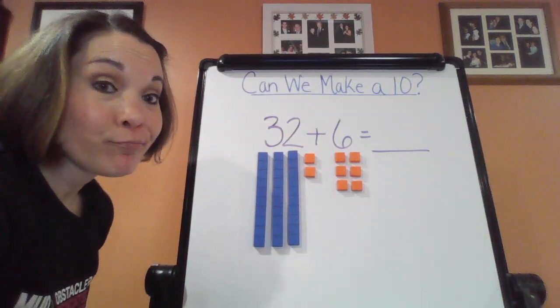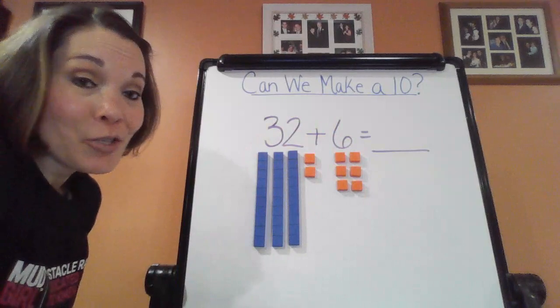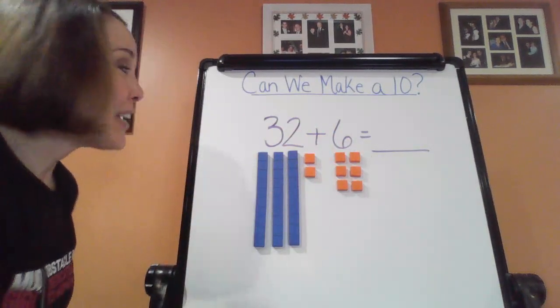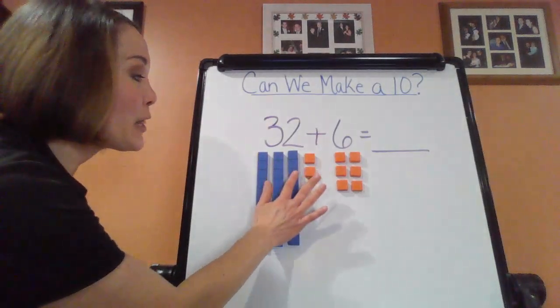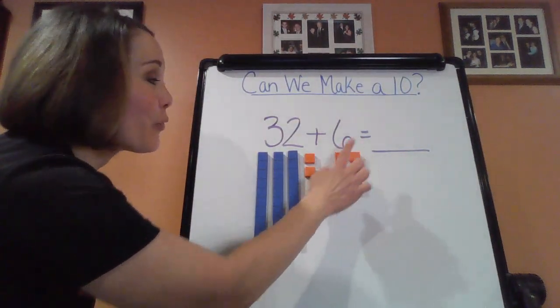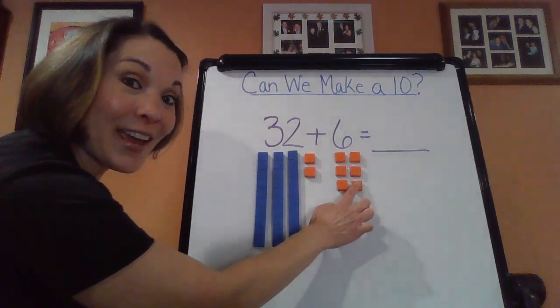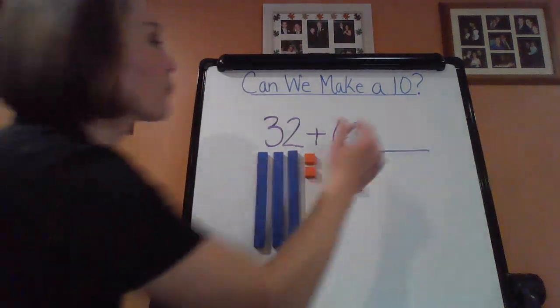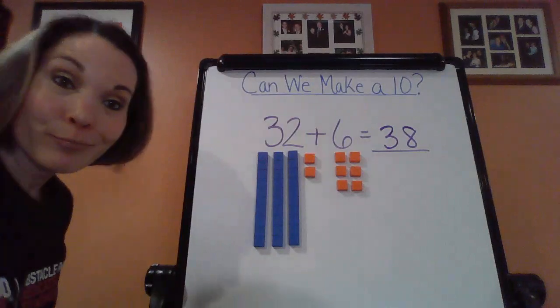So in this case, I'm not going to be taking down any ones. There's no need. I'm just going to count everything straight through. So let's go ahead for my 32 here. 10, 20, 30, 31, 32, 33, 34, 35, 36, 37, 38. So boys and girls, my answer here, my sum, is going to be 38.